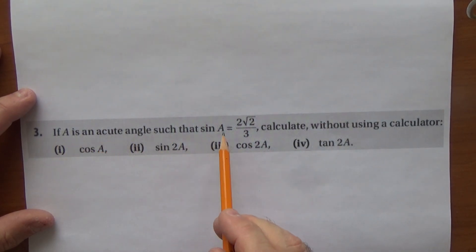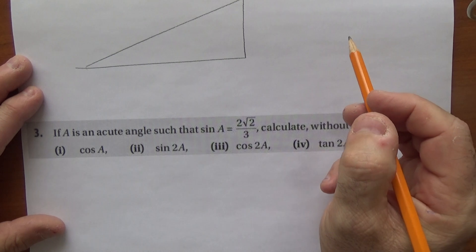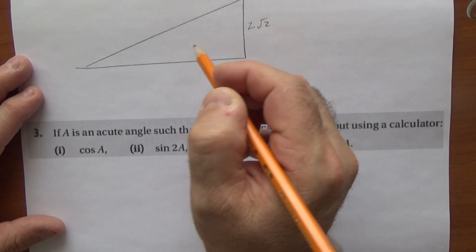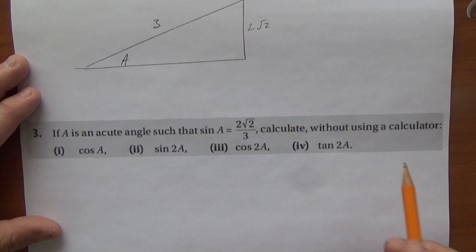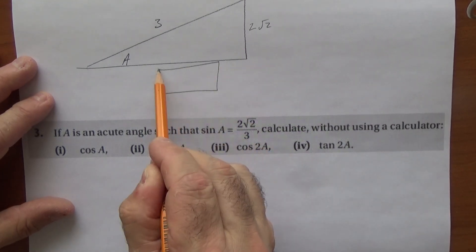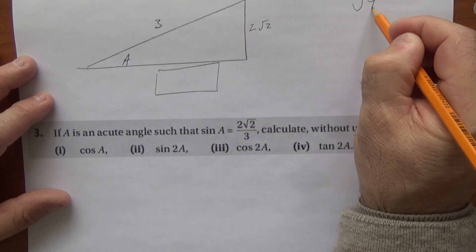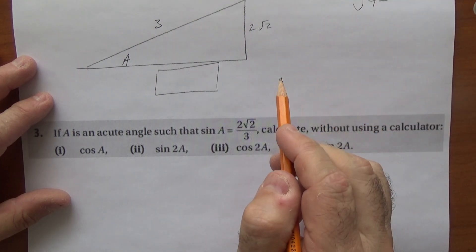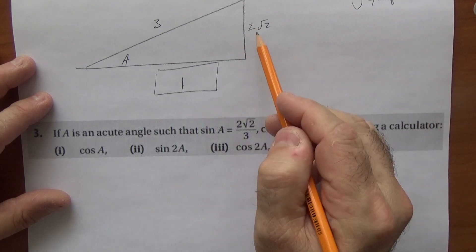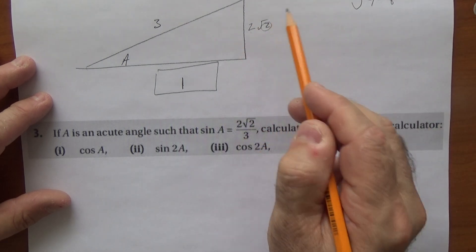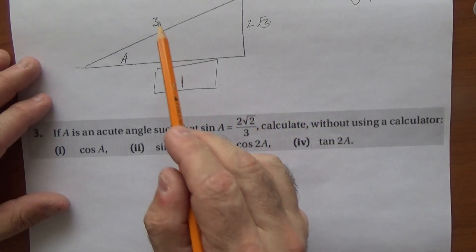Next: a is an acute angle with sin(a) = 2√2/3. Create a reference triangle: the opposite is 2√2, the hypotenuse is 3. Applying Pythagoras: the adjacent = √(9 - 8) = √1 = 1. I checked: 2√2 squared is 4×2 = 8, and 9 - 8 = 1. Correct.